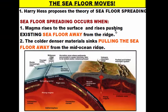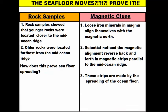So how do scientists prove this? There are two major pieces of evidence. First, scientists looked at rock samples taken from the ocean floor. What they noticed is that younger rocks are located closer to the mid-ocean ridge, and older rocks are located furthest away from the mid-ocean ridge.